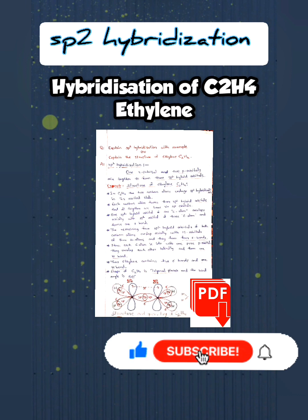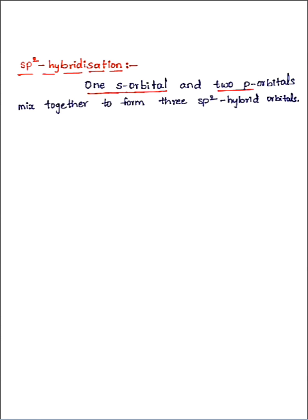Now let's move on to the topic. In sp2 hybridization, one s orbital and two p orbitals mix together to form three sp2 hybrid orbitals. In this mixture there is one s orbital and two p orbitals, hence three orbitals are present. This means there is 33% s character and 67% p character present in sp2 hybridization.